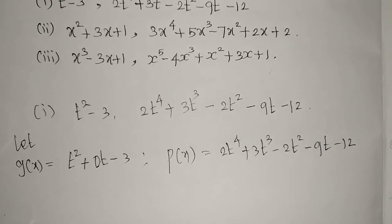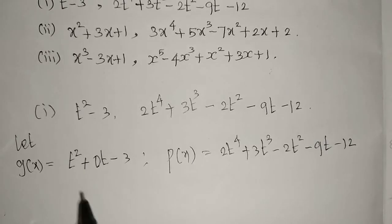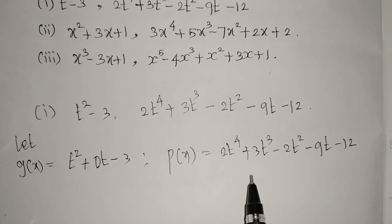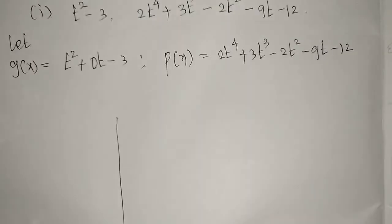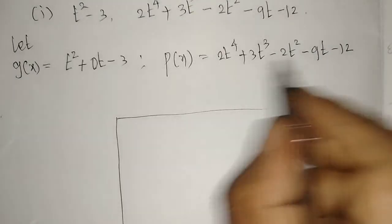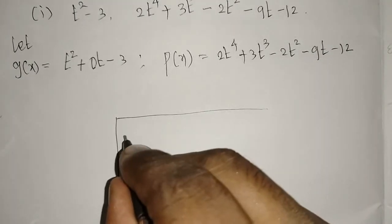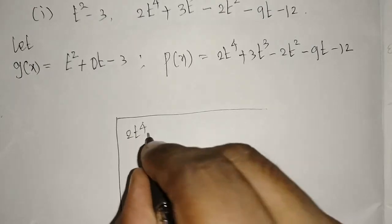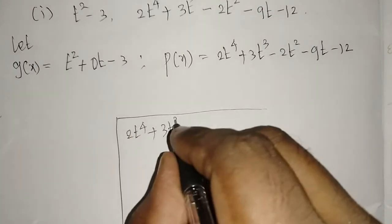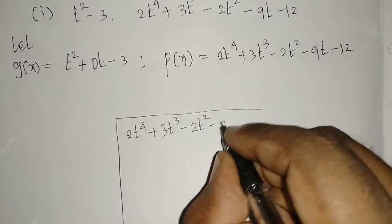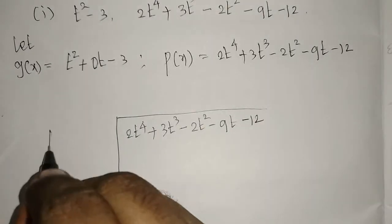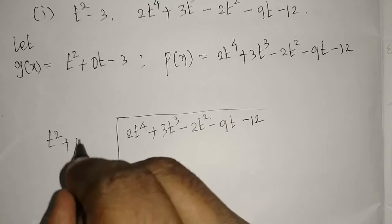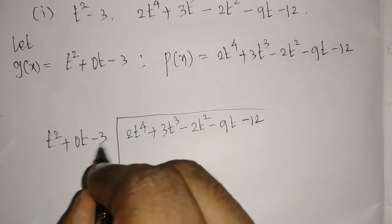Now we divide the second polynomial by the first using long division. Inside we write 2t⁴ + 3t³ - 2t² - 9t - 12, and outside we write the divisor t² + 0t - 3.